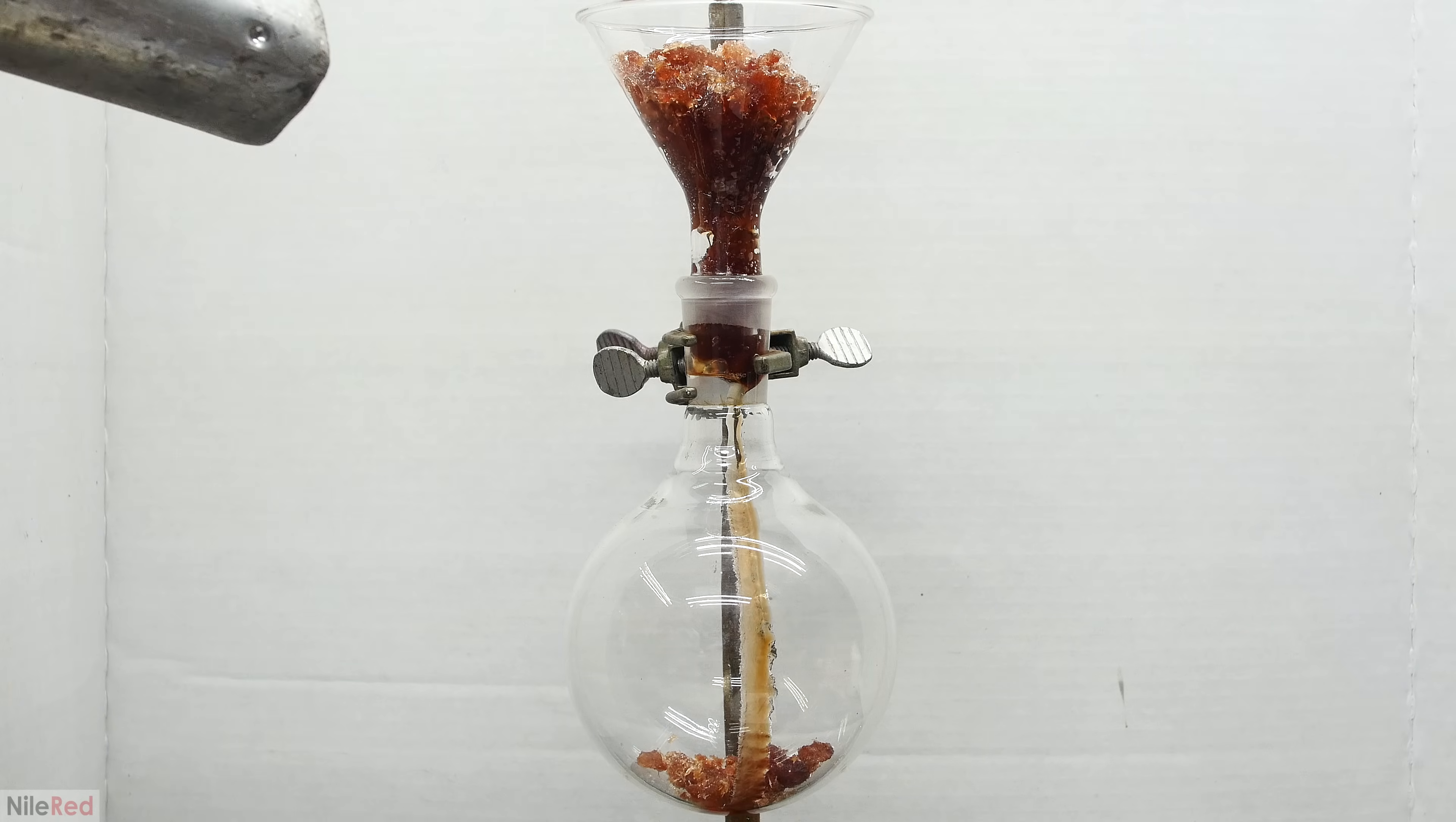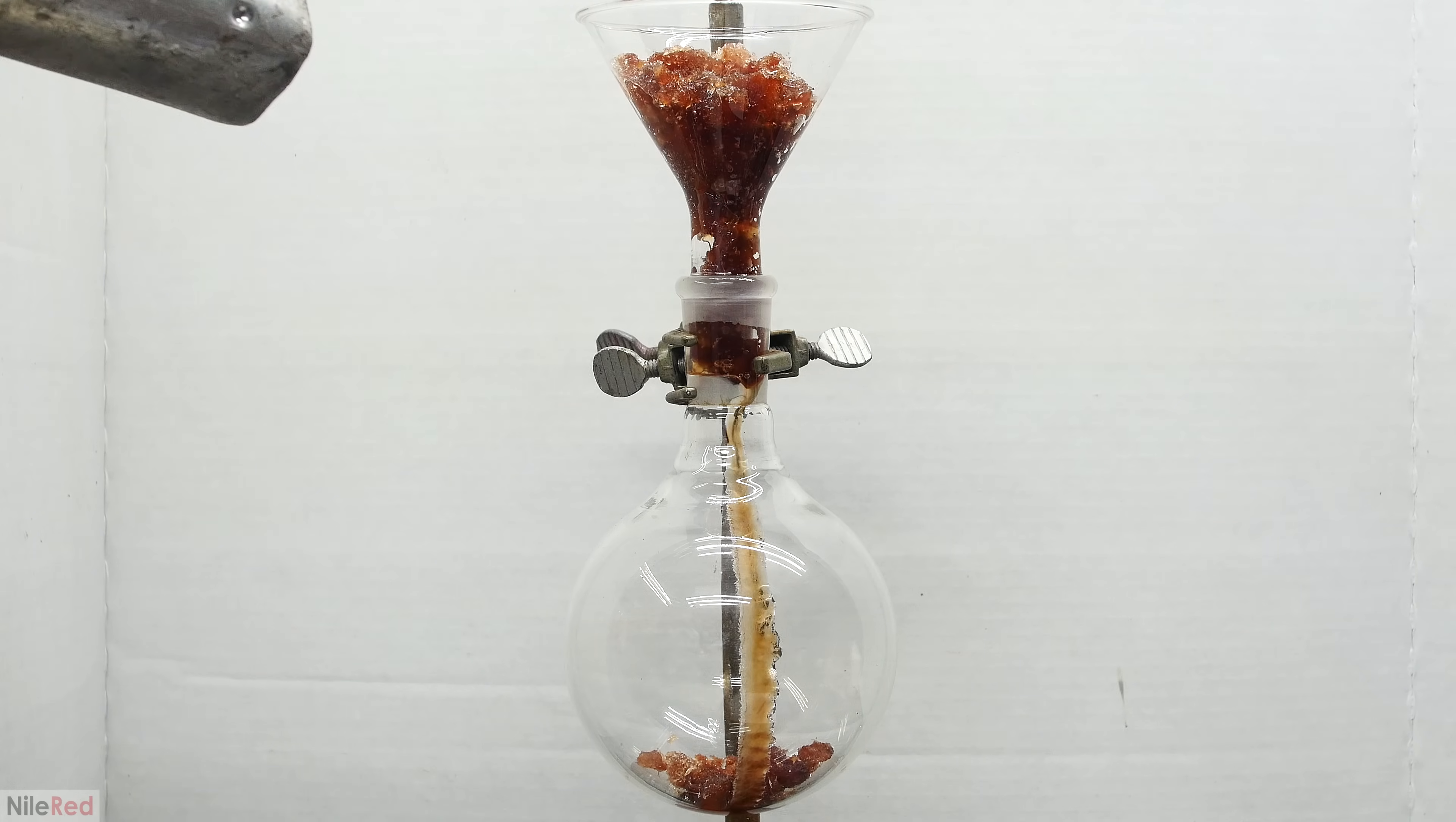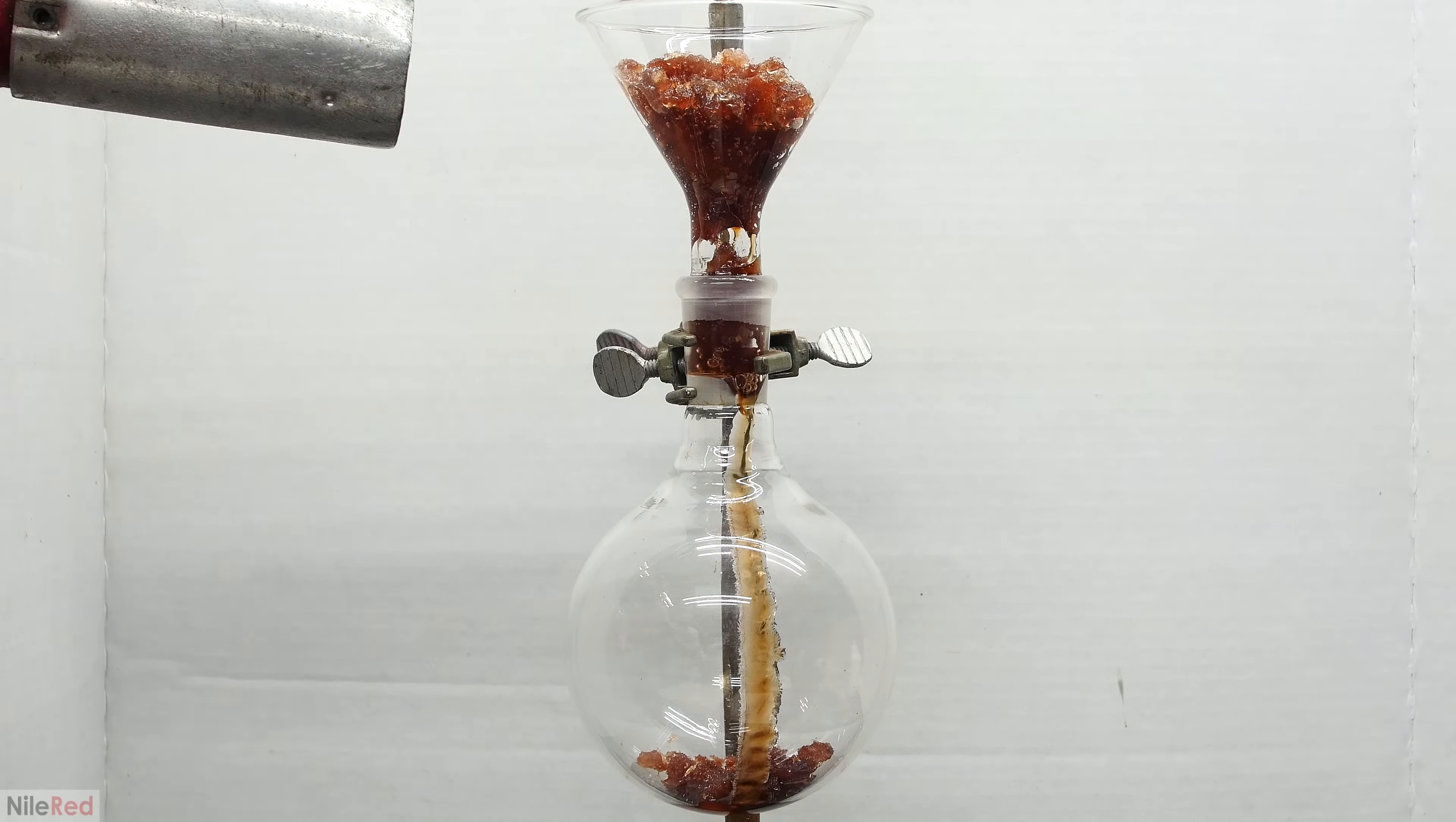I dumped the loose phenol into a glass funnel, and I blasted it with a heat gun to melt it. I didn't use a huge funnel, so I couldn't add everything at once, and I had to do it in something like three separate batches.